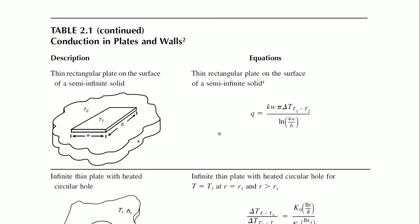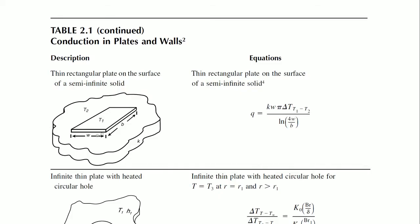This can be used as a handbook, especially for those trying to write their own code. For every typical case of a thermal condition, the operational equations are given. For example, a thin rectangular plate on the surface of a semi-infinite solid — in relation to the total mass of the heat-generating device, the outside thing may be one or two orders of magnitude bigger, so it is practically a semi-infinite solid.